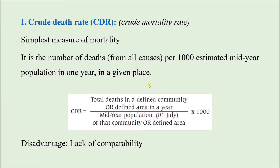Crude Death Rate, or Crude Mortality Rate, is the simplest measure of mortality. It is defined as the number of deaths from all causes per 1000 estimated mid-year population in one year in a given place. In the numerator we have the total number of deaths from all causes; the denominator is the mid-year population. Since we have a specified population and a time factor (one year), this becomes a rate. The multiplication factor is 1000.